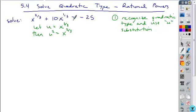We can now make that substitution. We get u squared plus 10u equals negative 25, and we solve the resulting equation.